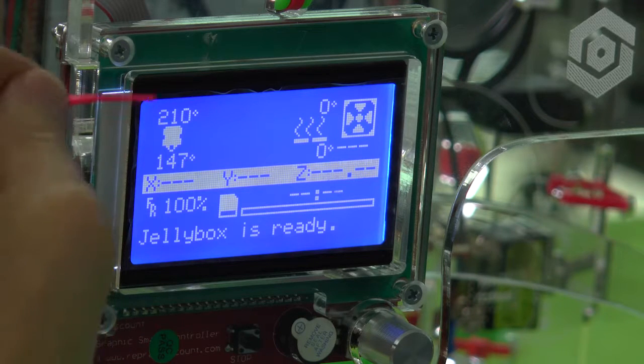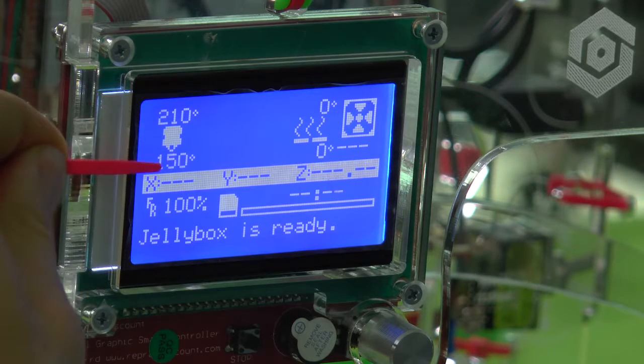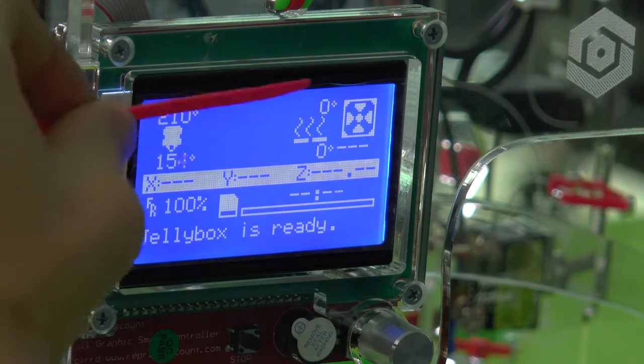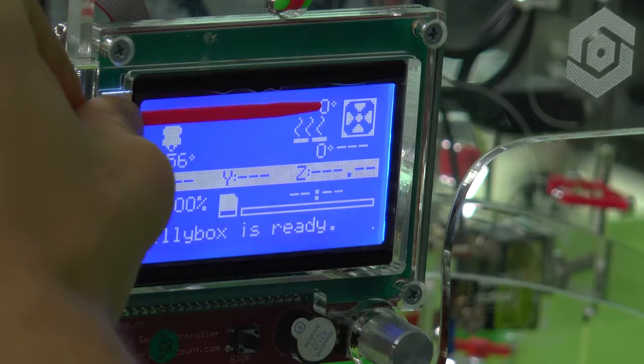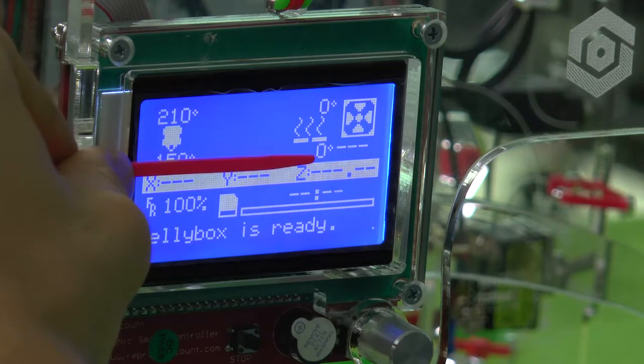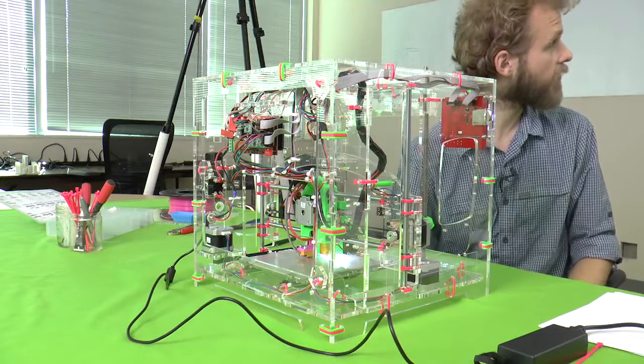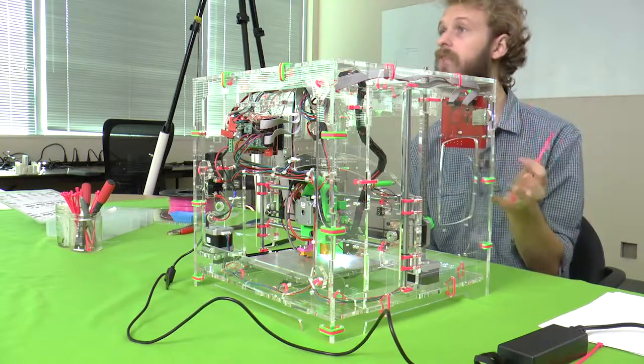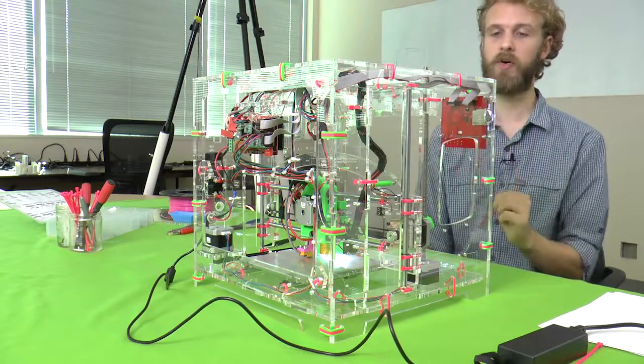Quick rundown of what these things are. This is the desired nozzle temperature, the current nozzle temperature. This is the desired hotbed temperature. This is the current hotbed temperature. I currently do not have hotbed on the printer, but there is an upgrade for Jelly Box that does that.